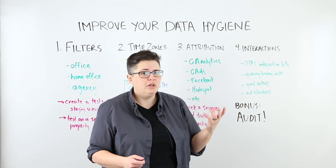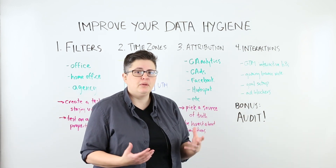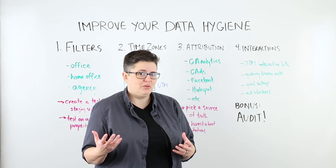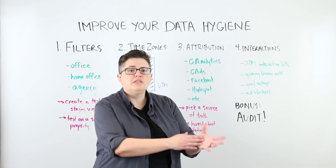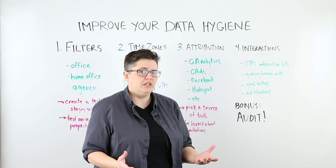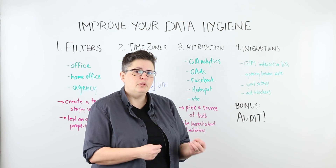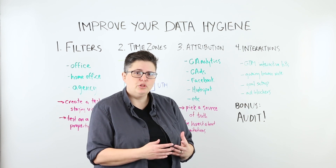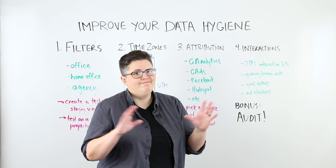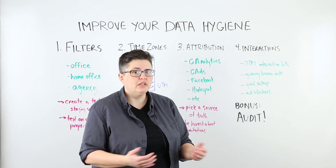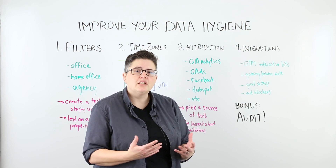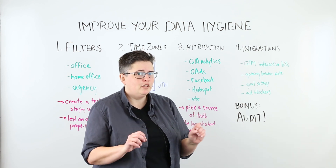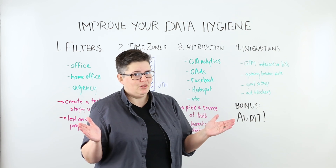Ad blockers could be anywhere from 2% to 10% of your audience, depending on how technically sophisticated your visitors are. You'll end up in situations where you have a form fill but no corresponding visit to match with it — it just goes into an attribution black hole. They did fill out the form so at least you got their data, but you have no idea where they came from. Think about the percentage of your visitors who probably have an ad blocker installed and make sure you're comfortable with that level of error in your data. Stuff like Apple is changing the way they do tracking, so these numbers may never 100% match up — and that's okay. You can't measure everything.